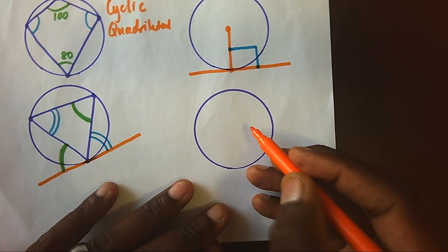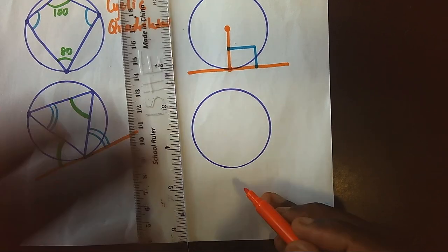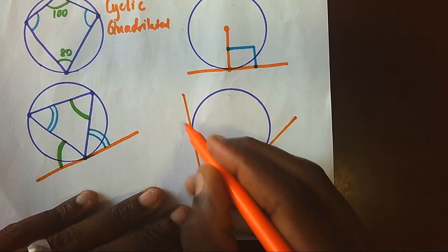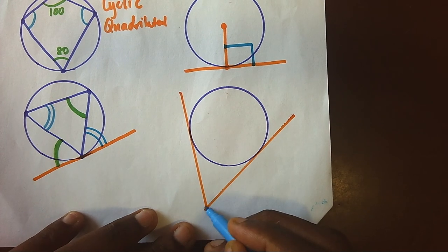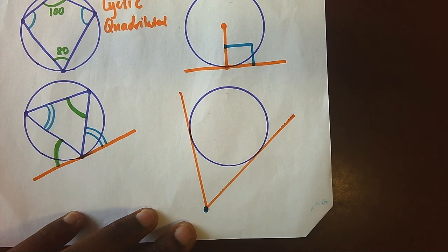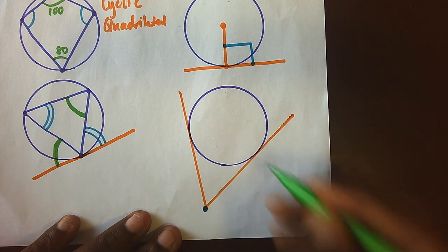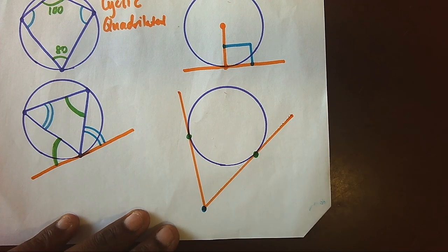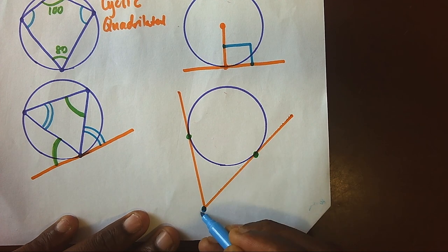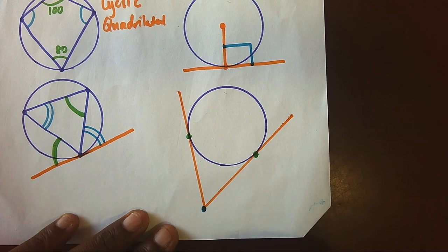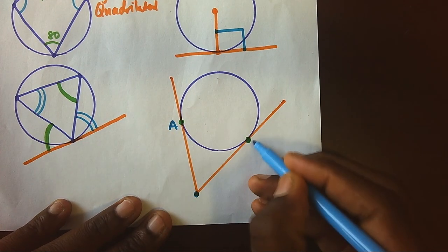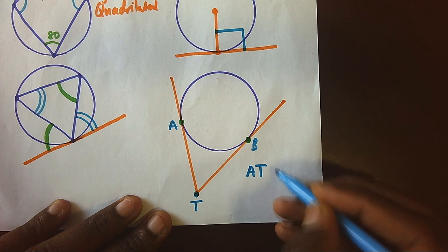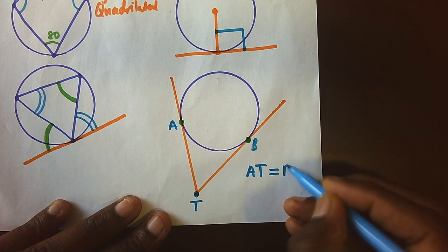The last law says that we can have more than one tangent. If you have two tangents and they are not parallel, the two tangents will always meet somewhere outside the circle. The law tells us that from the point of contact with the circle to the point where they meet, the two distances will always be equal. So if the points are A, B, and T, the distance from A to T is always equal to the distance from B to T.